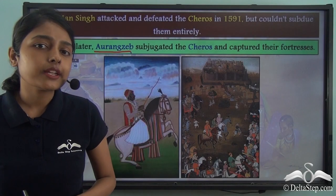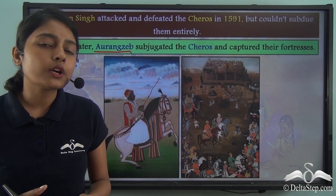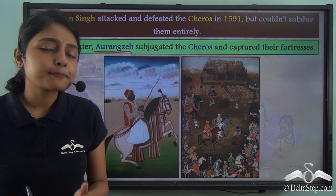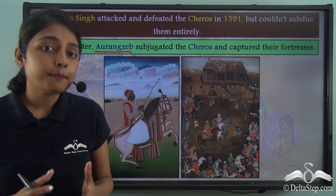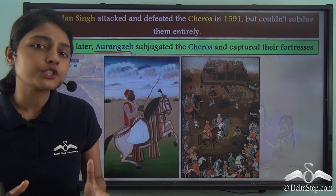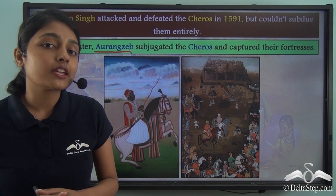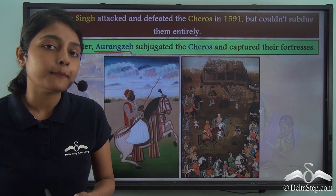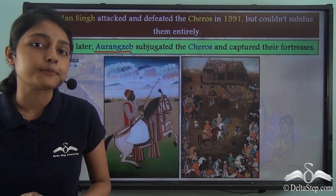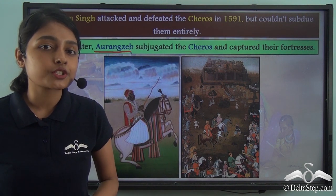The Mughal Empire, under the leadership of different Mughal rulers, expanded in size and went on to conquering major parts of the Indian subcontinent. One such instance of this expansion was the subjugation of the Chero Chiefdom.